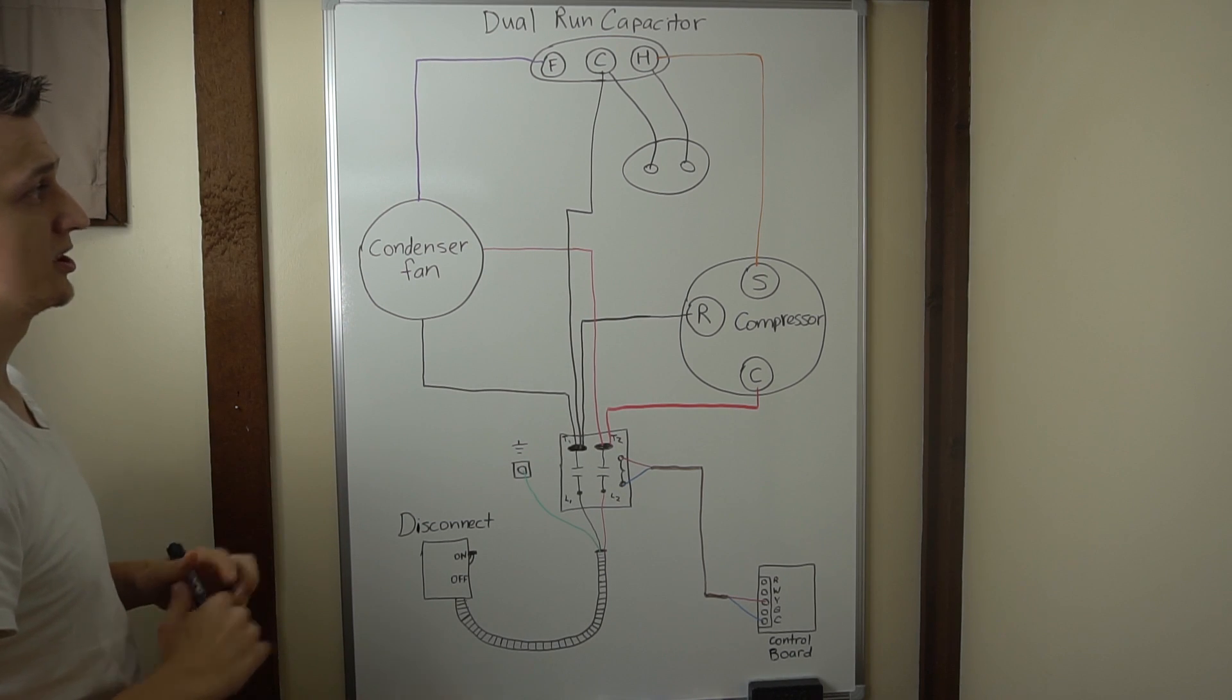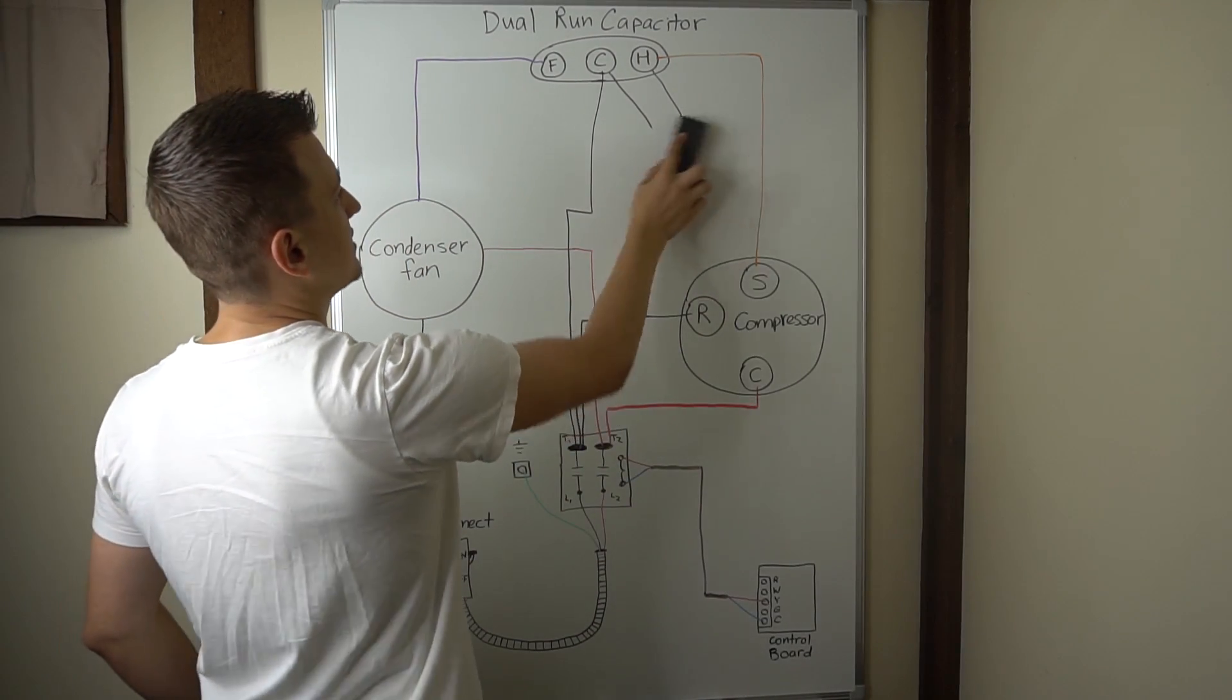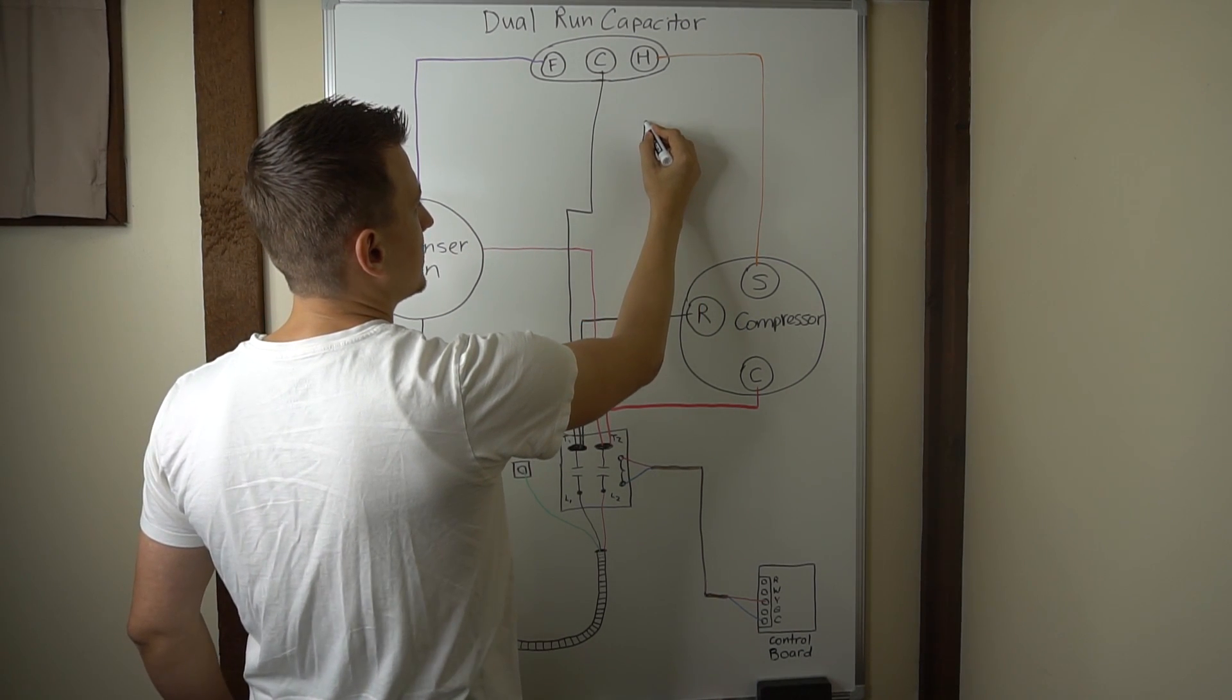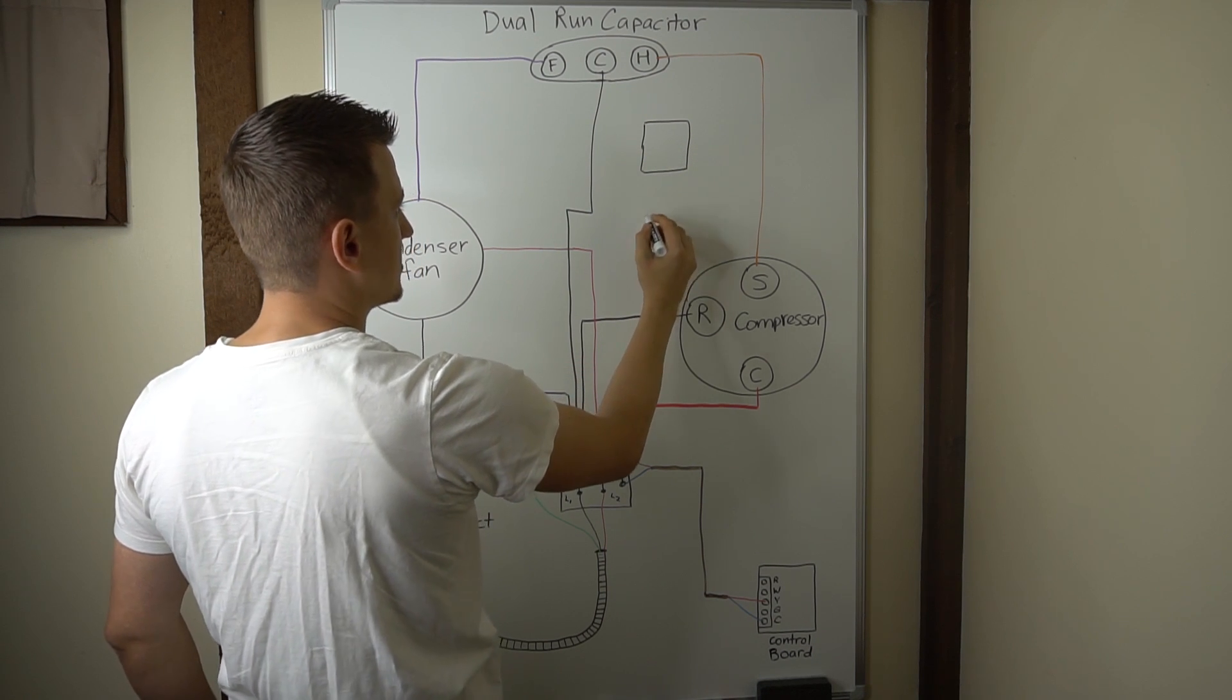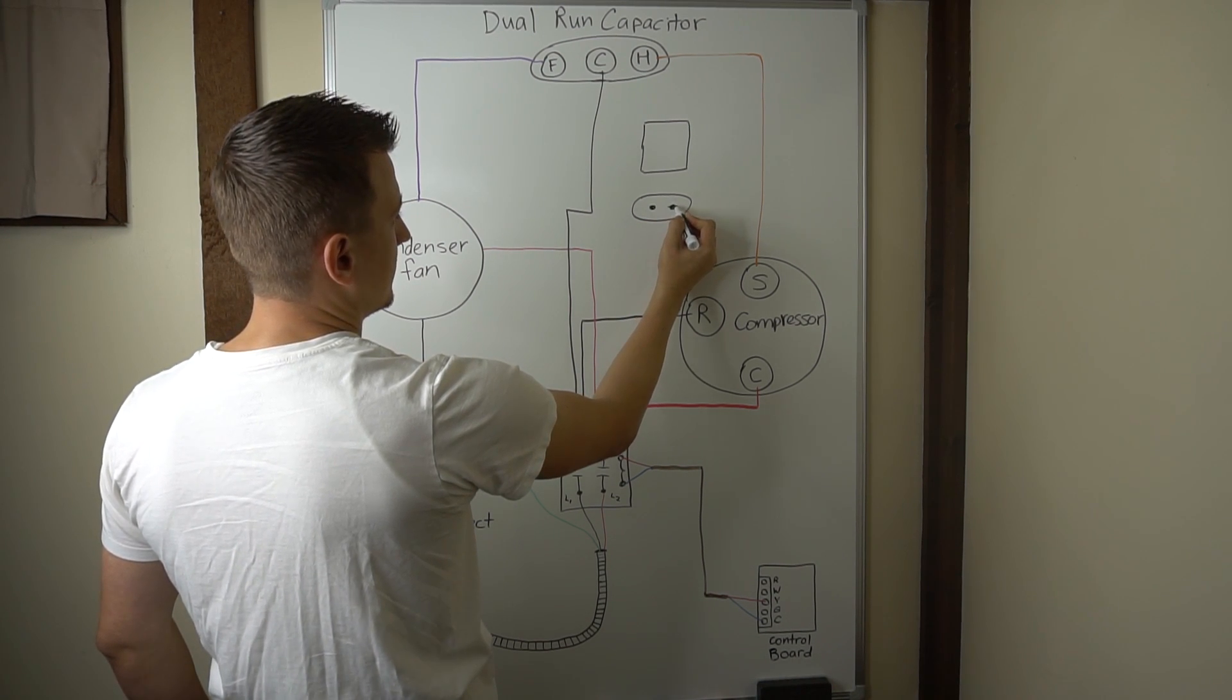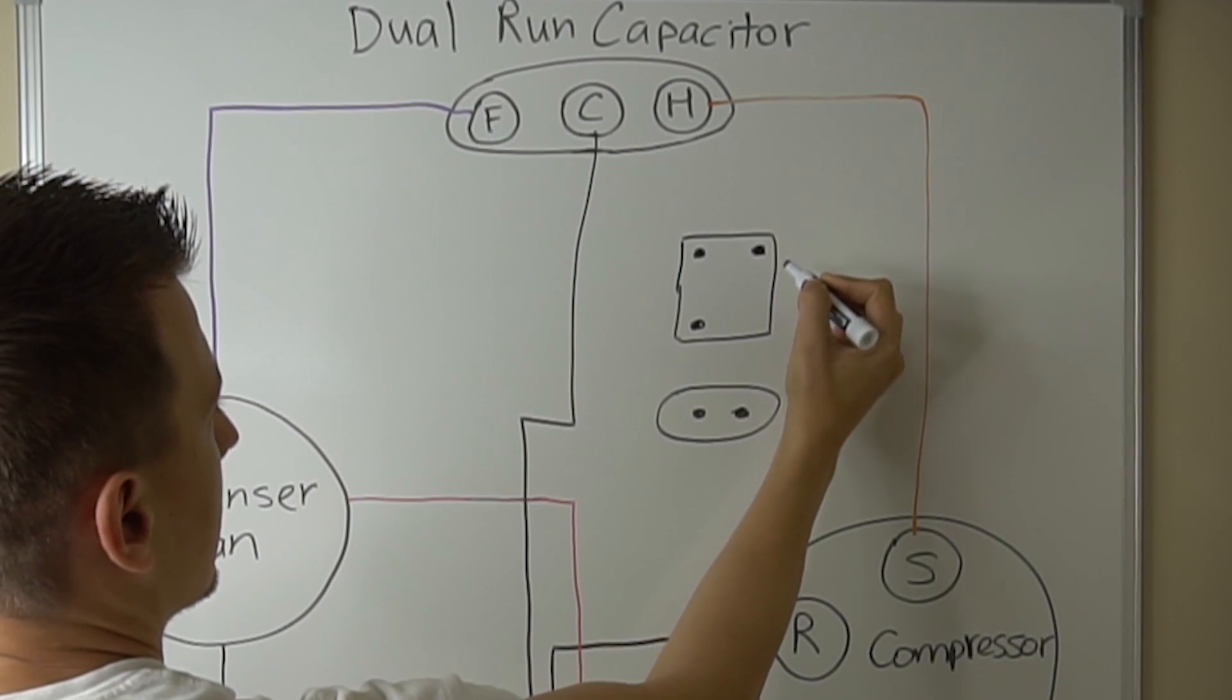But if you wanted to put in a start capacitor with a potential relay, it would be a little bit more complicated. And let's just see an example of what that would look like. So let's draw our potential relay in the form of this box right here. And our start capacitor will be right here. And then of course we have the 5-2-1. There's going to be three terminals like that.